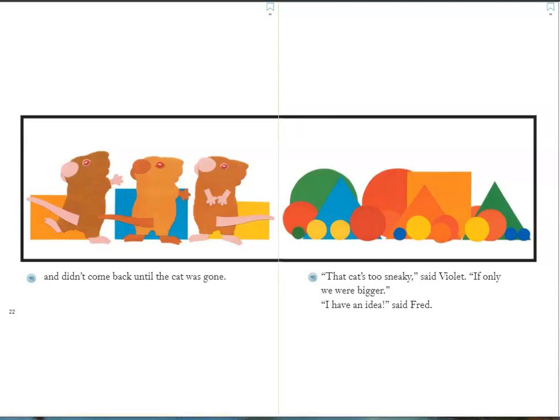"That cat's too sneaky," said Violet. "If only we were bigger." "I have an idea," said Fred.